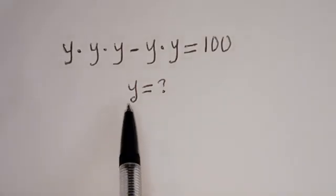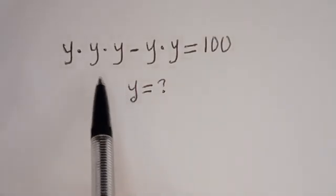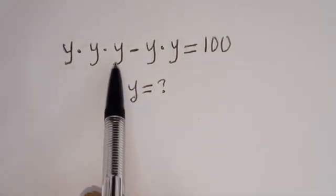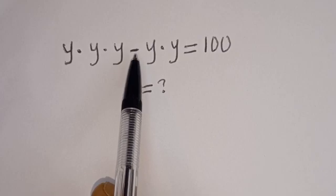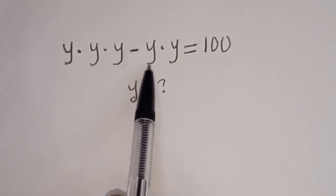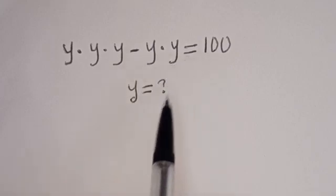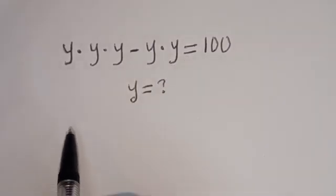Hello, how to solve for Y in this equation? Y multiplied by Y multiplied by Y, minus Y multiplied by Y, is equal to 100.